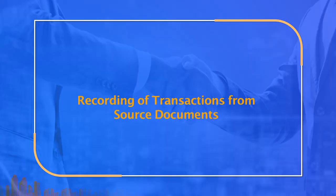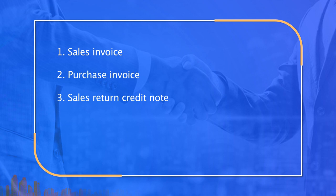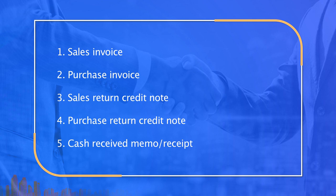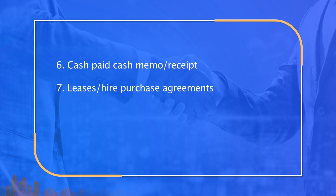Regarding recording of transactions from source documents — the source documents required to support different types of transactions include: sales invoice, purchase invoice, sales return credit note, purchase return credit note, cash received memo receipt, cash paid cash memo receipt, lease or hire purchase agreements, and for staff salaries — approved payrolls.